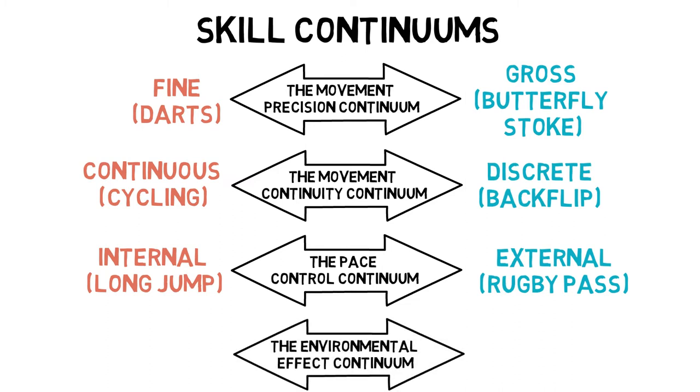And the environmental effect continuum. Open skills, which are unpredictable such as a football pass, and closed skills, which are predictable such as a javelin throw.